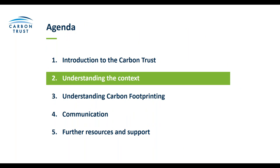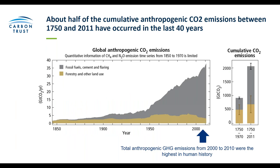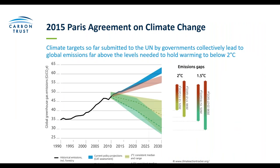Most of you will know that climate change is a problem for both governments and businesses. To set the scene, this graph shows that total anthropogenic greenhouse gas emissions from 2000 to 2010 were the highest in human history. Since 1998 we've experienced some of the highest global temperatures in a century. To address this, the 2015 Paris Agreement allowed governments to pledge to keep global warming temperatures below the two degree limit.